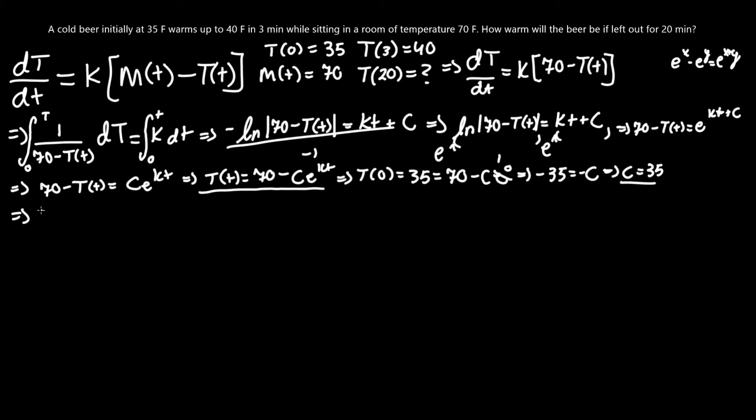Let's rewrite that now. T(t) equals 70 minus 35 e to the kt. Now, next we're going to find the k constant. By doing that, we can actually plug in a non-zero constant to find k, meaning T(3) equals 40. So, let's do that.